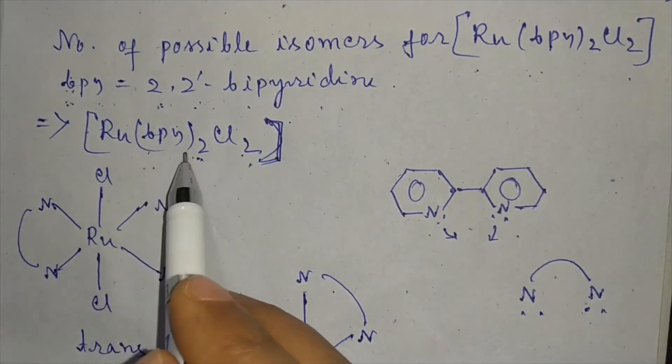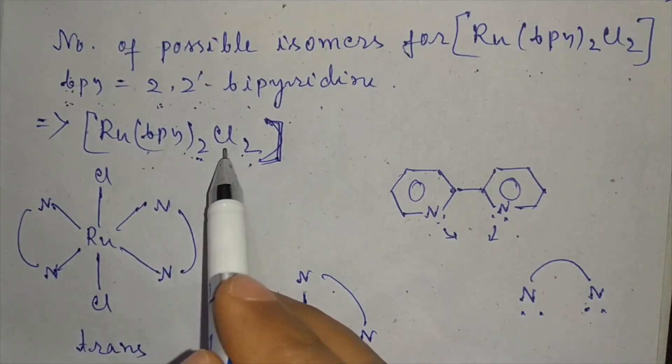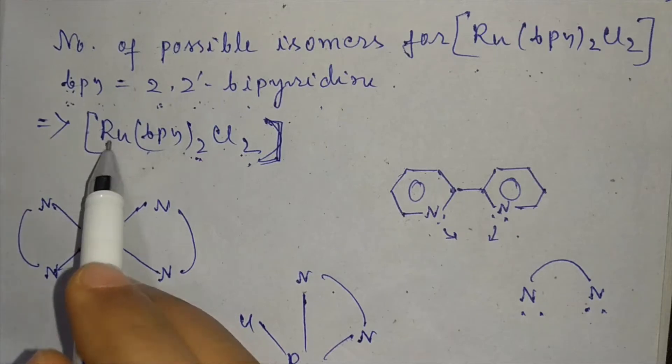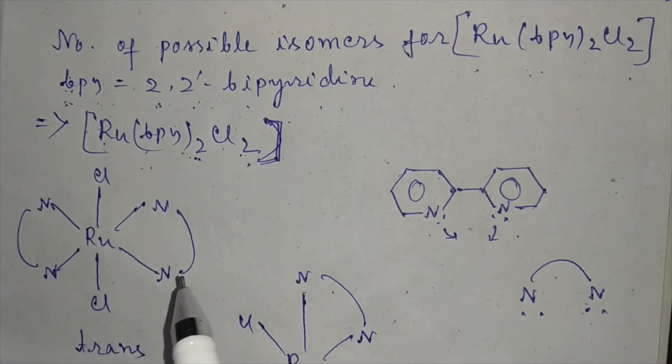As there are two bidentate and two monodentate ligands here, the coordination number of this complex is 6. For a six-coordination complex, the geometry will be octahedral.